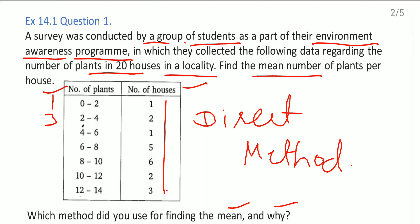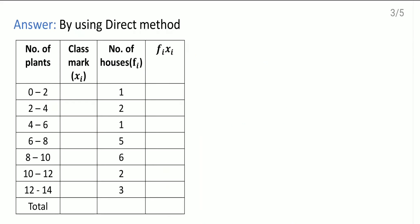For the direct method, we have to make a table like this way. Class marks, then here number of houses that means the frequency, and then product of them. Now you see here.